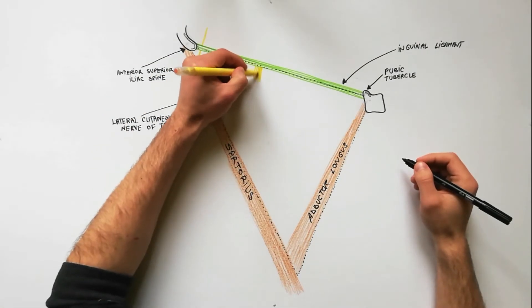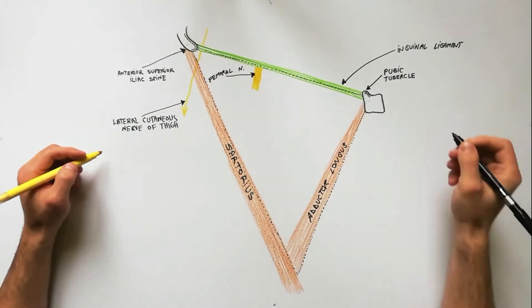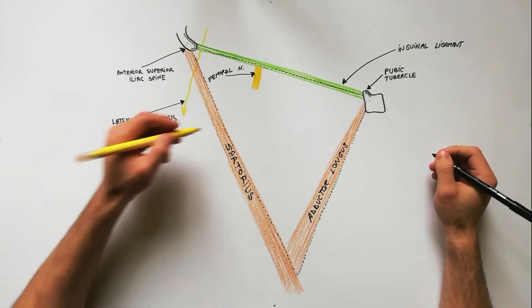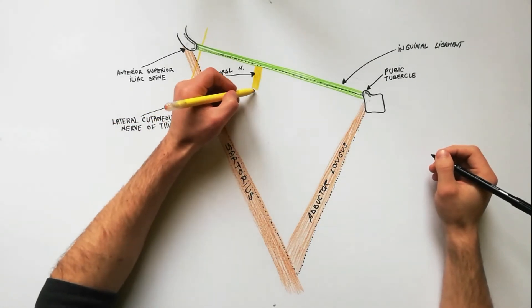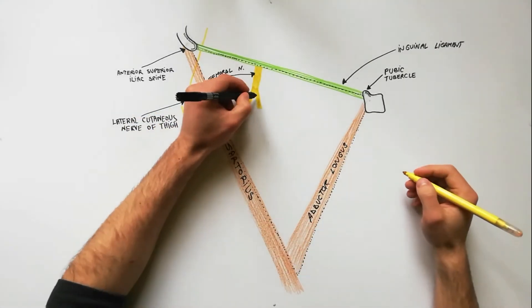The femoral nerve enters the femoral triangle by passing beneath the inguinal ligament. After a short course of about 4 centimeters in the thigh, the nerve is divided into anterior and posterior divisions.